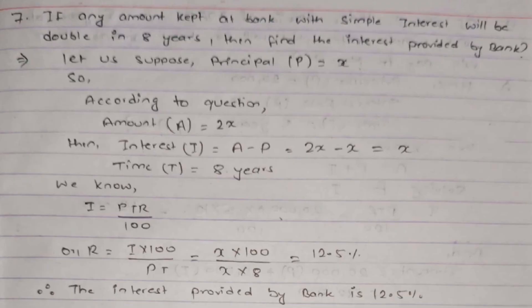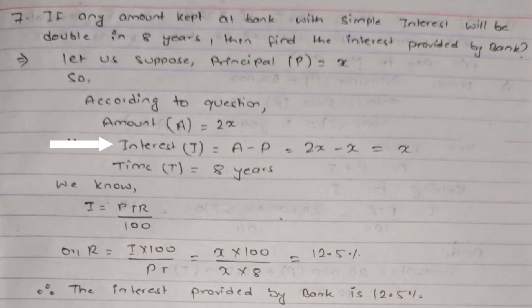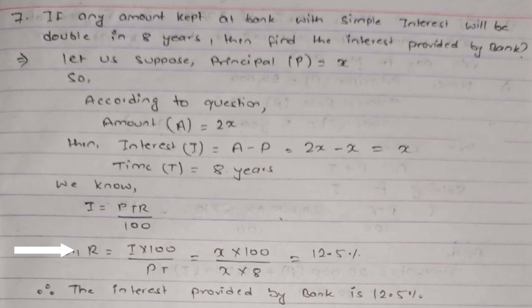Now let's move on to question number 7: if any amount kept at a bank with simple interest will double in 8 years, find the interest rate provided by the bank. We suppose the principal to be x. Since the amount doubles, the amount is 2x, so interest = amount − principal = 2x − x = x. Time is 8 years. Using the formula r = I × 100 / (P × T): r = x × 100 / (x × 8) = 12.5%. Therefore the rate of interest provided by the bank is 12.5%.